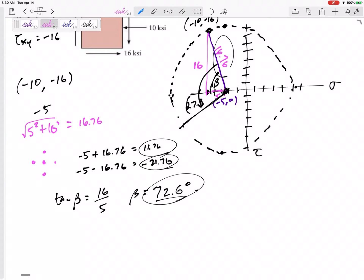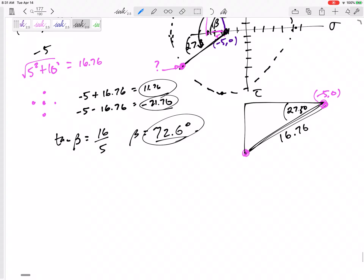What are the coordinates of my new point? Hypotenuse is still 16.76. I'm starting at the center, negative 5 comma 0. I know the angle 27.3 degrees and the hypotenuse 16.76. So that side: 16.76 sine 27.3, and 16.76 cosine 27.3.